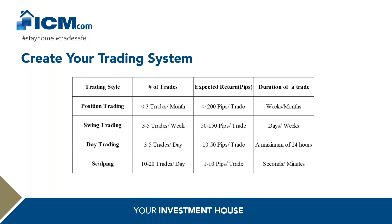Once you have a trading system — combining a couple of indicators, knowing the outcome of each — you can backtest it. You can write down the rules and backtest manually by going over charts, or work with someone good at programming, or use websites that allow you to create automated trading systems. Once you have the strategy as an automated system, you can use the MetaTrader 4 platform to backtest it.